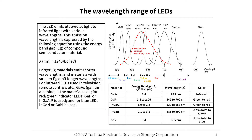The Wavelength Range of LEDs. LEDs emit ultraviolet to infrared light with various wavelengths. The emission wavelength is expressed by the equation: λ (nm) = 1240 / Eg (eV), where Eg is the energy band gap of the compound semiconductor material. Materials with larger Eg emit shorter wavelengths; materials with smaller Eg emit longer wavelengths. For infrared LEDs used in TV remote controls, gallium arsenide is used. For red-to-green indicator LEDs, gallium phosphide or indium gallium aluminium phosphide is used. For blue LEDs, indium gallium nitride or gallium nitride is used.